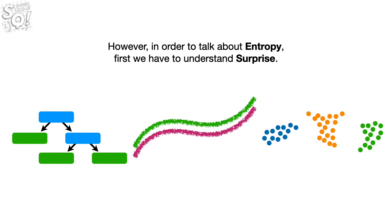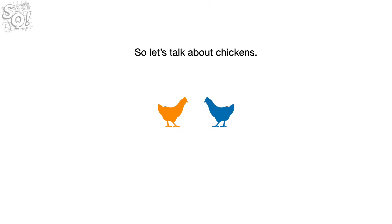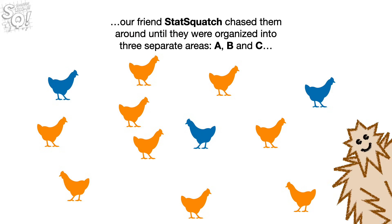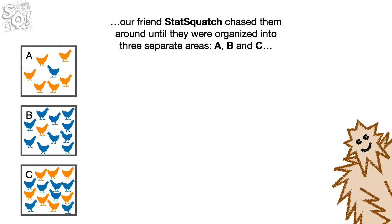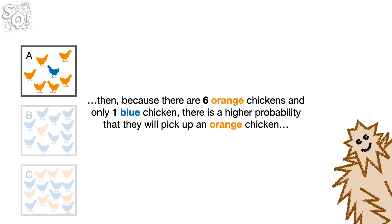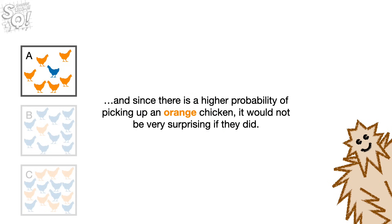However, in order to talk about entropy, first we have to understand surprise. So let's talk about chickens. Imagine we had two types of chickens, orange and blue. Instead of just letting them randomly roam all over the screen, our friend StatSquatch chased them around until they were organized into three separate areas. Now, if StatSquatch just randomly picked up a chicken in area A, then, because there are six orange chickens and only one blue chicken, there is a higher probability that they will pick up an orange chicken. And since there is a higher probability of picking up an orange chicken, it would not be very surprising if they did.